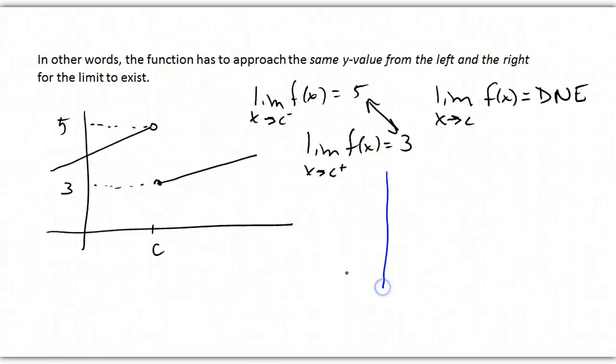But, how about this situation? There's c, and there's f of c, and as I'm approaching from the left, along here, we're approaching f of c, and as we're approaching from the right, we're also approaching the same value of f of c. Therefore, we can say this limit exists, because from the left and the right, we approach the same y value.